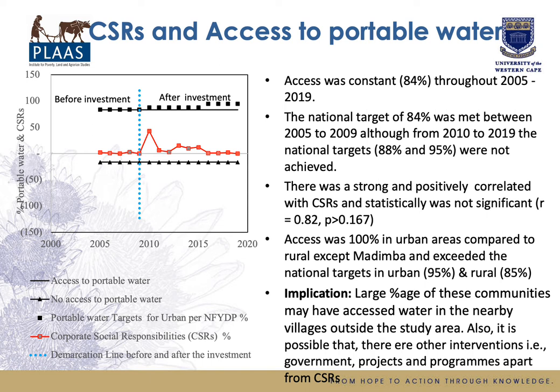On access to portable water: access was constant throughout the study period and did meet the national target before investment, but after investment it was not achieved. There was a strong and positive correlation but statistically not significant. Access was more prevalent in urban areas compared to rural areas, except for one rural village. This implies that a large percentage of communities may have accessed water from other nearby villages.